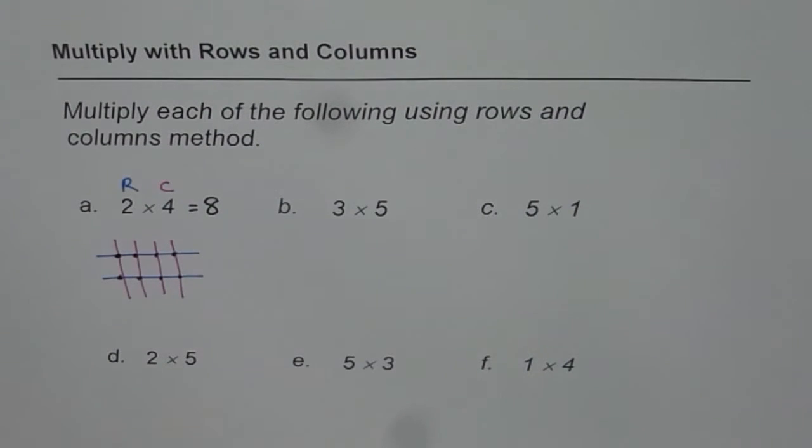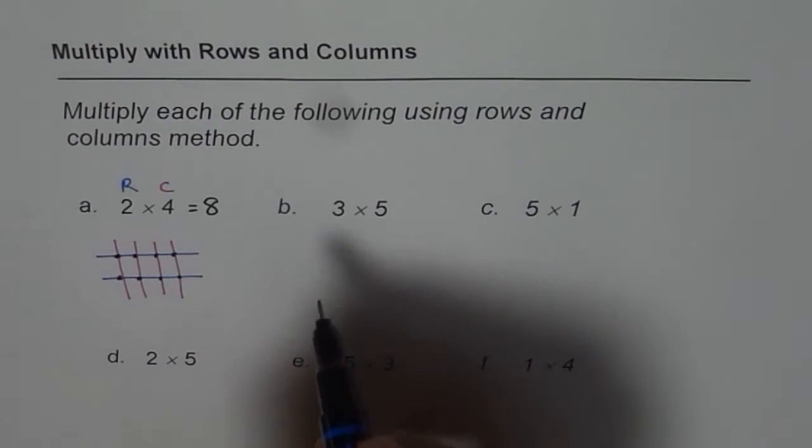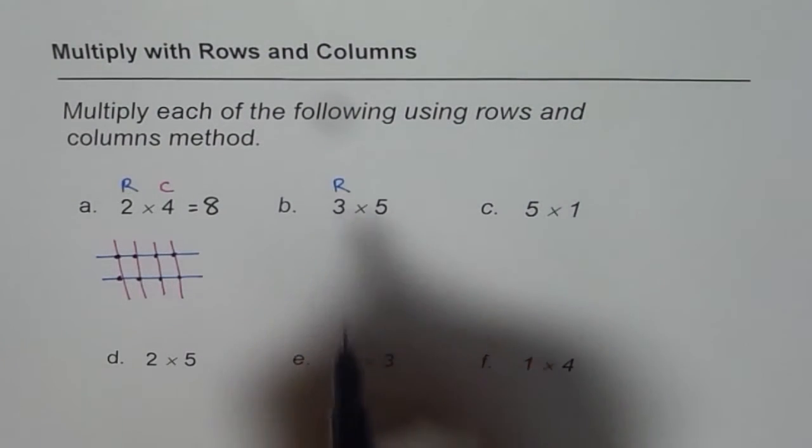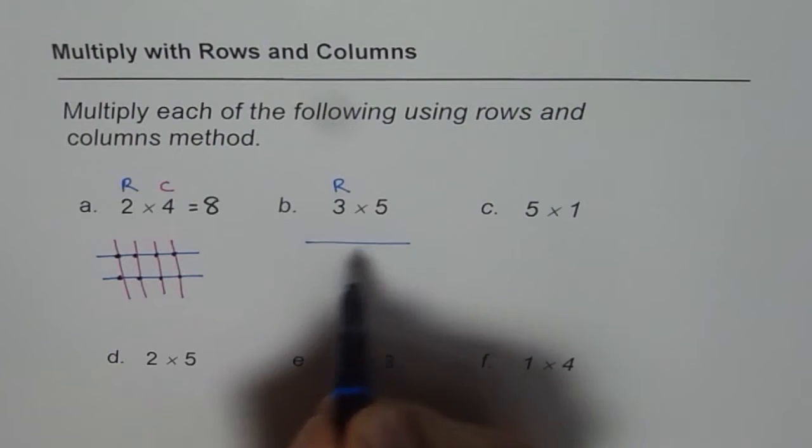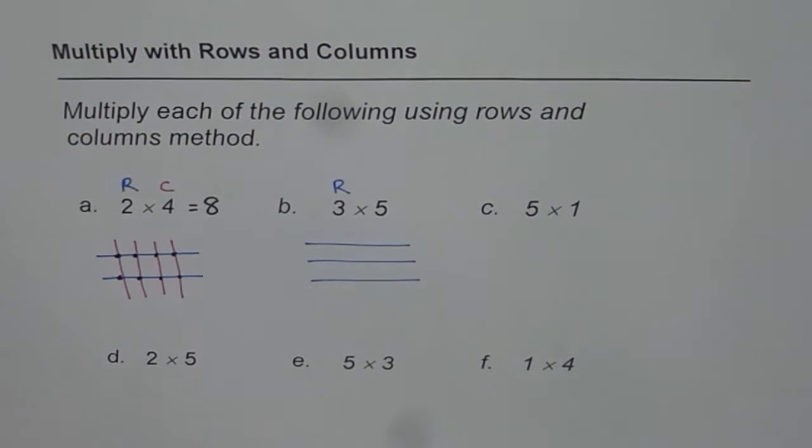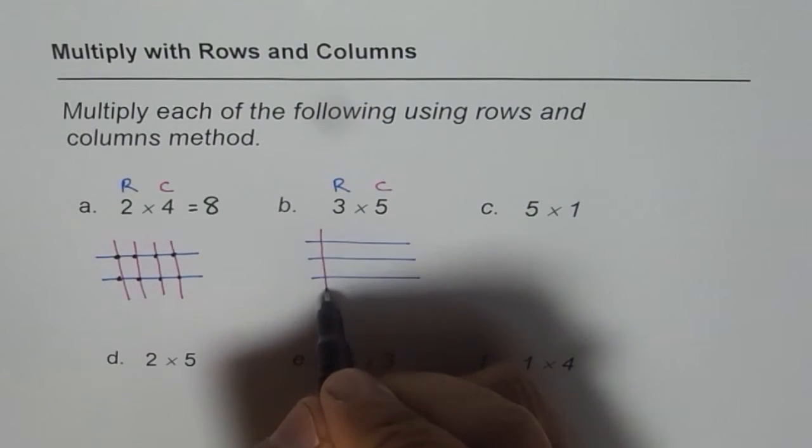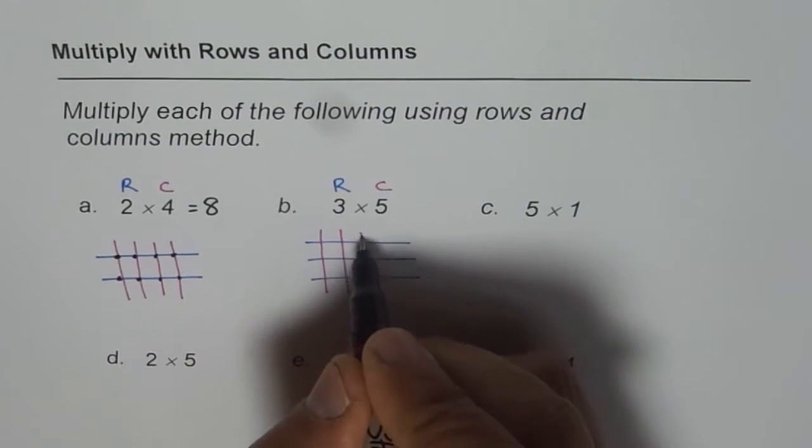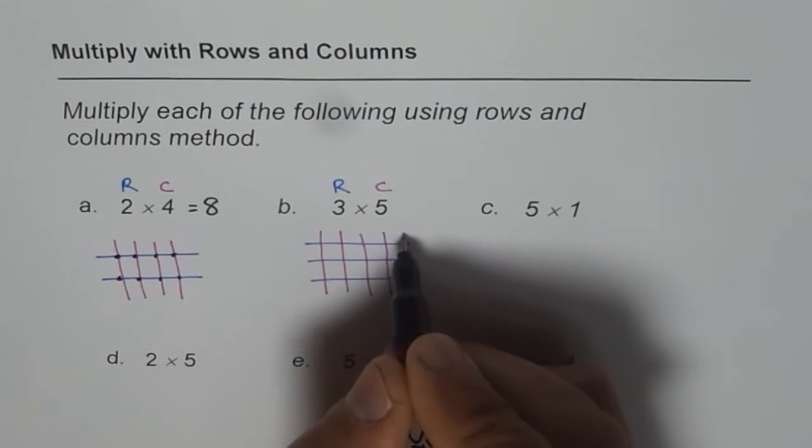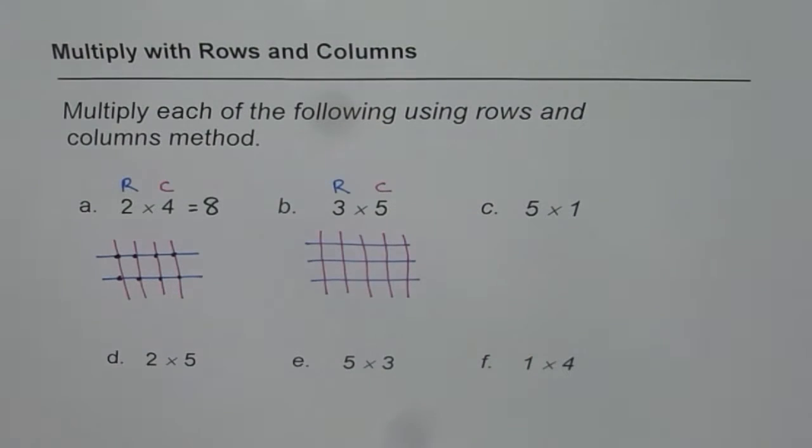Now let us do 3 times 5. So 3 is number of rows, horizontal lines, 1, 2, 3 and 5 is number of columns, vertical lines, 1, 2, 3, 4, 5. What we need to do now?